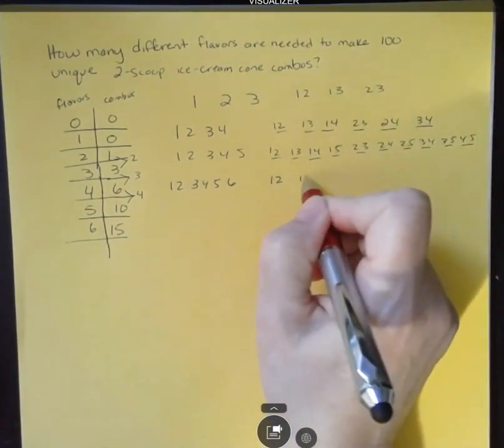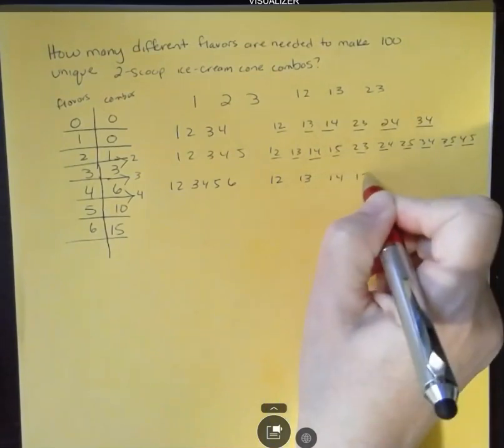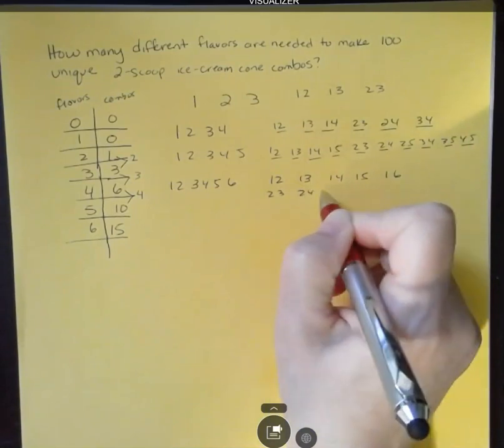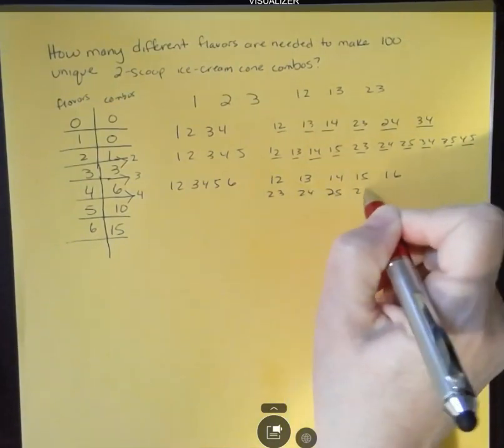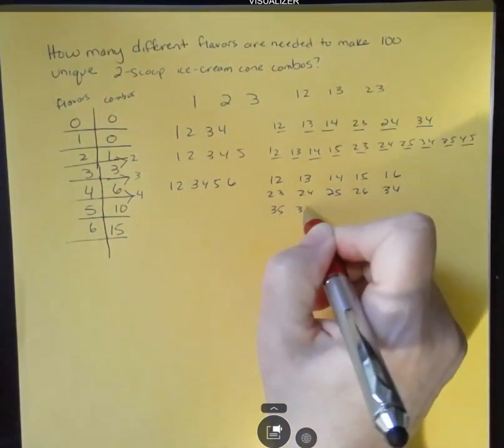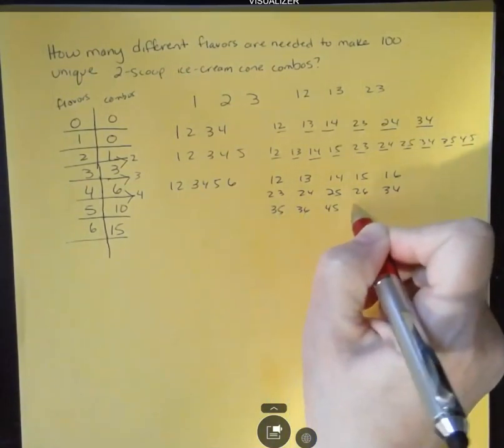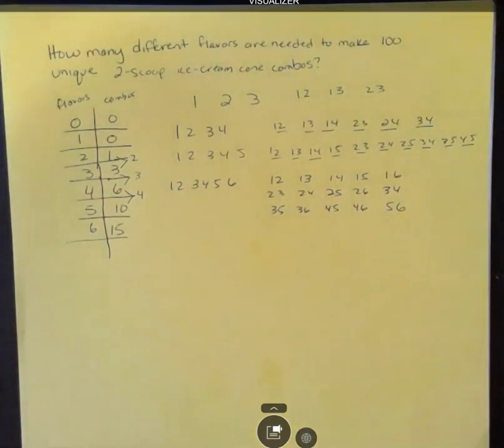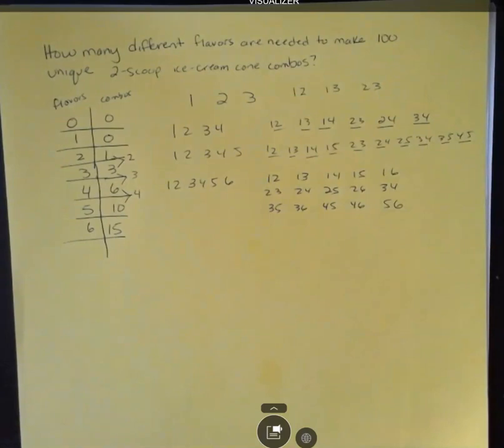We have one and two, one and three, one and four, one and five, one and six, two and three, two and four, two and five, two and six, three and four, three and five, three and six, four and five, four and six and five and six. I put those up in rows of five. So it would be easy for me to count them. Yes, there's 15.